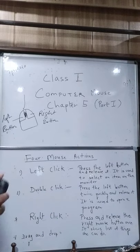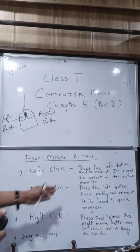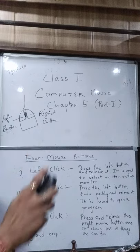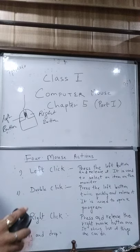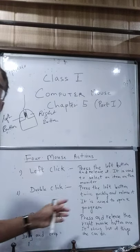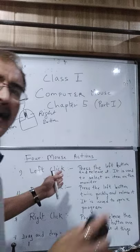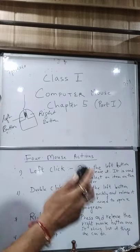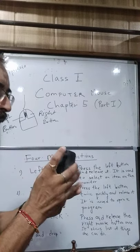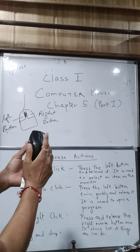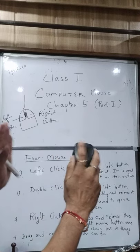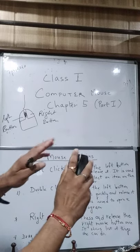What's the use of double click? It is used to open a program. If there's an icon on the desktop, or a folder or file that you want to open, you have to double click it. Which button do you press? You press the left button - the one towards your left side.